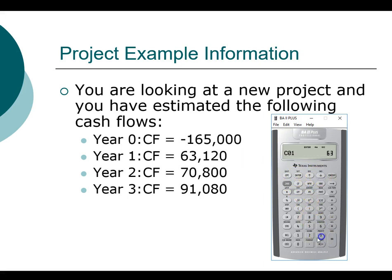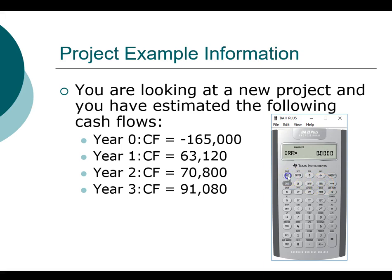Now we advance to year one, which is $63,120 — enter. F01 will be one. Then cash flow two is $70,800. Advance, and cash flow three is $91,080 — press Enter. Now that all our information is entered, we need to compute the internal rate of return. That's the IRR function on your calculator — this is the first time we are using this function. Press IRR, then Compute. Congratulations, you just computed the internal rate of return for this project.